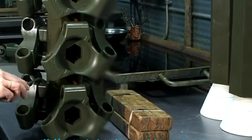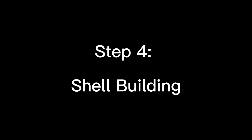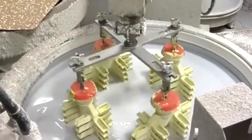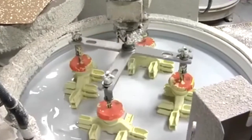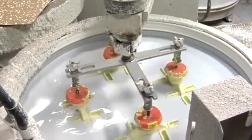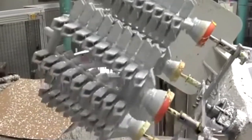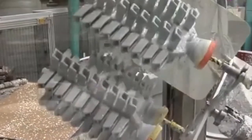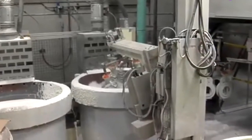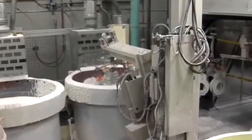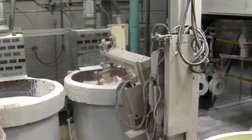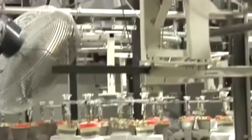Step 4: Shell Building. The shell building is a whole silica sol process — it will repeat to dry and harden. First, dip the assembly into a colloidal silica coating, then sprinkle with fire-resistant sand until dry and hardened, forming a dense refractory coating surface outside the wax models. Repeat this step 5 to 6 times to finally get a shell with sufficient strength and refractoriness.